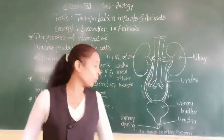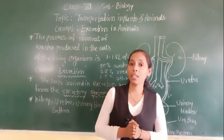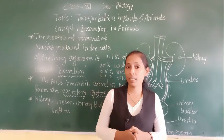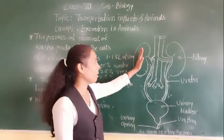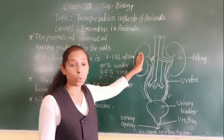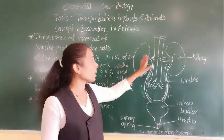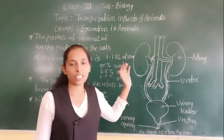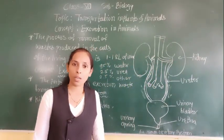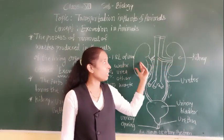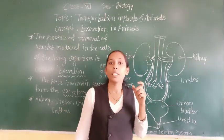Let's discuss the human excretory system. So many waste products are formed, and it is necessary to throw them out. The main organ performing this work is the kidney. The kidney helps to throw out waste materials from our body. There are two kidneys present in the human body, situated at the level of the waist on either side of the vertebral column.